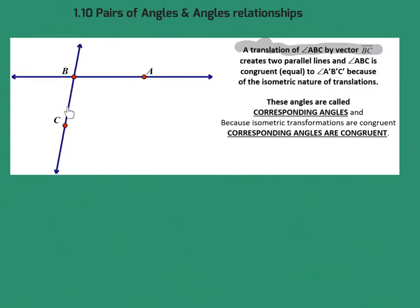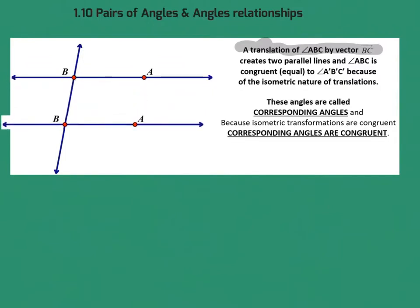We're going to take this angle and slide it down — a translation will form parallel lines. If I take line BA and slide the whole angle down to this position, we have created the original angle and its image angle. A translation by vector BC creates two parallel lines, and angle ABC, the original, equals the new image angle down here.